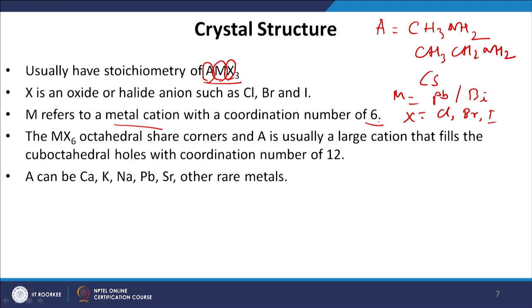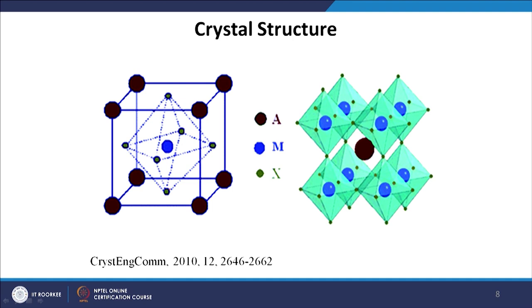A can be calcium, potassium, sodium, lead, strontium, and other rare metals. In a typical crystal structure of a perovskite material, M lies at the center, A is at the corner, and the face center is occupied by halogen atoms. The octahedra are equally shared by each unit cell when surrounded in a three-dimensional volume. These octahedra are coordinated with each other to make a giant cubo-octahedral geometry, and the metal cation sits at the center of this cubo-octahedral geometry.